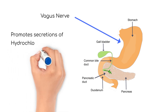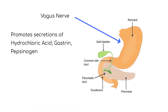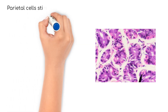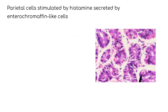These impulses promote secretions of hydrochloric acid by parietal cells. Gastrin-secreting G-cells and pepsinogen-secreting chief cells are also stimulated. Gastrin is a hormone that promotes stomach secretions. In addition to parasympathetic nervous system stimulation, parietal cells are stimulated by histamine secreted by ECL, or enterochromaffin-like cells.